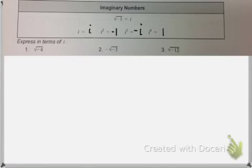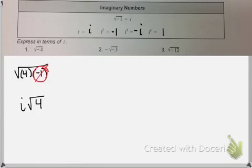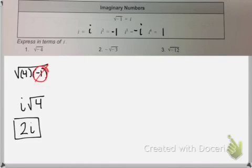So if we want to express in terms of i, the first thing I want you to do when you see a negative number inside your radical is take out the i. So think about it like this: negative 4 is just 4 times negative 1. And we know that the square root of negative 1 we call i. So that square root of negative 1 puts an i out front. So we have i times the square root of 4, and the square root of 4 is just 2. So it's 2i. The first thing I want you to do is take out that i before you simplify anything else.